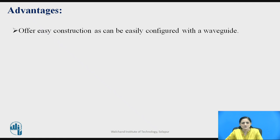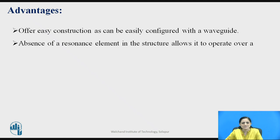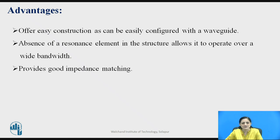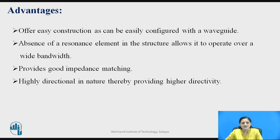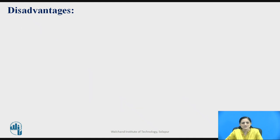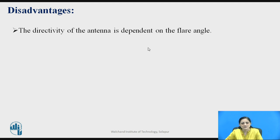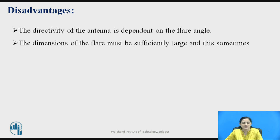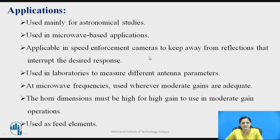Horn antenna offers easy construction as it can be easily configured with the waveguide. The absence of a resonance element in the structure allows it to operate over a wide bandwidth. It also provides good impedance matching and is highly directional, thereby providing higher directivity. It offers less reflections. A disadvantage is that the directivity is dependent on the flare angle, which must have an optimum value. Another disadvantage is that the dimensions of the flare must be sufficiently large, which sometimes makes the antenna bulky.